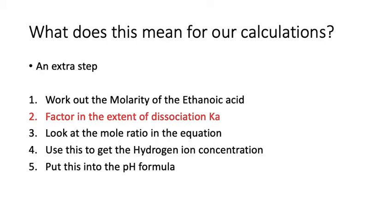How does that affect our calculations? It gives us an extra step. We work out the molarity of the ethanoic acid as before, but then we need to factor in the extent of dissociation, which is given by the equilibrium constant Ka.